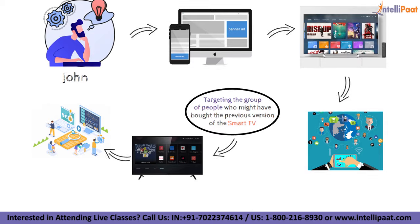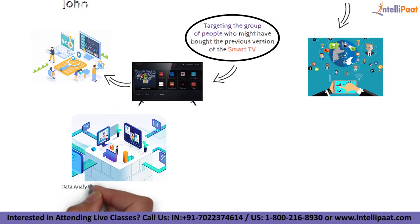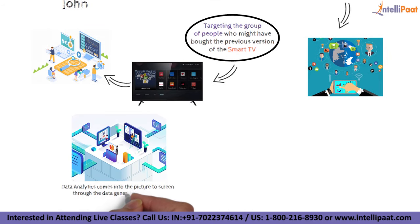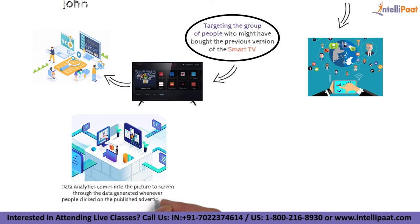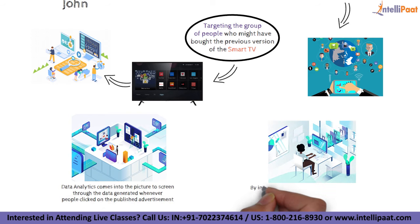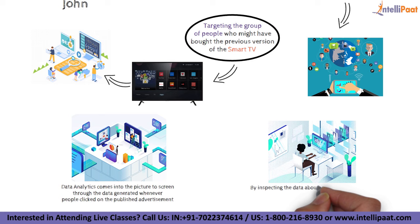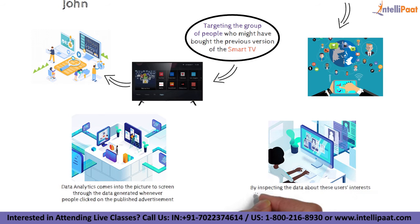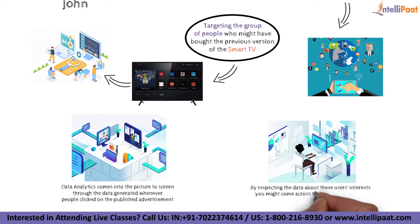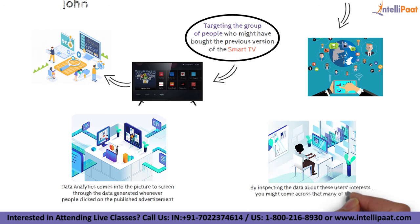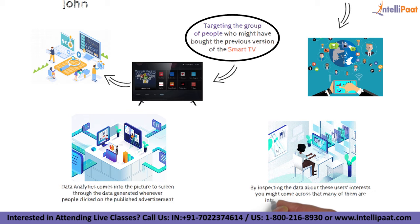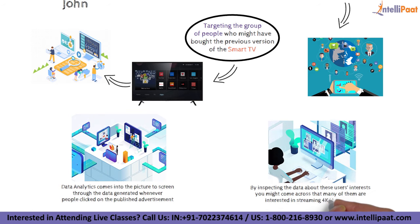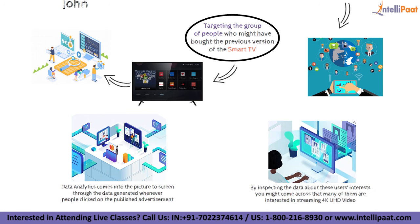John starts by targeting the group of people who might have bought the previous versions of the smart TV in question. As the campaign runs, data analytics comes into the picture through the data generated whenever people clicked on the published advertisement. By inspecting the data about these users' interest and their buying patterns, you might come across that many of them are interested in streaming 4K UHD video.